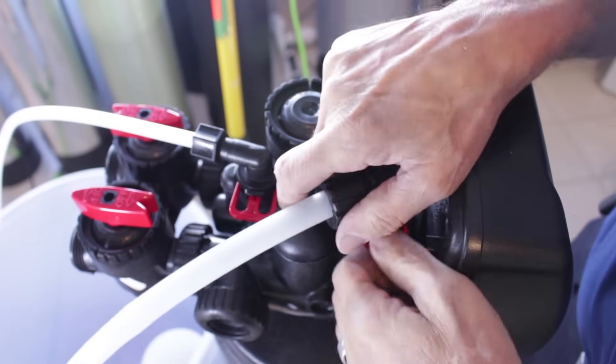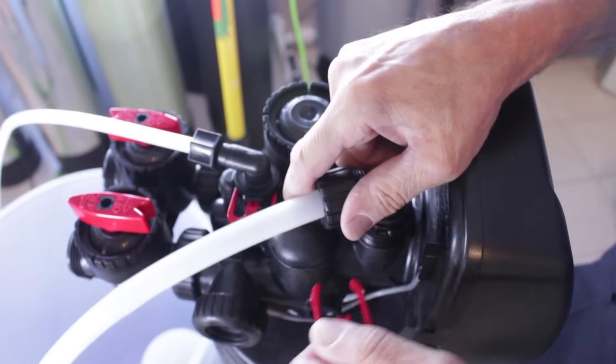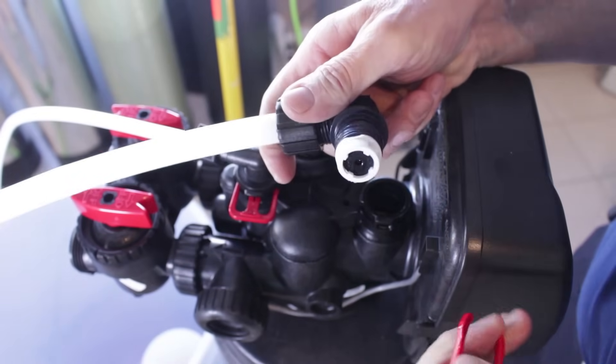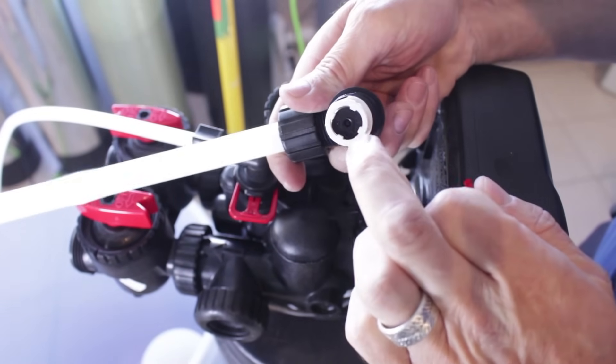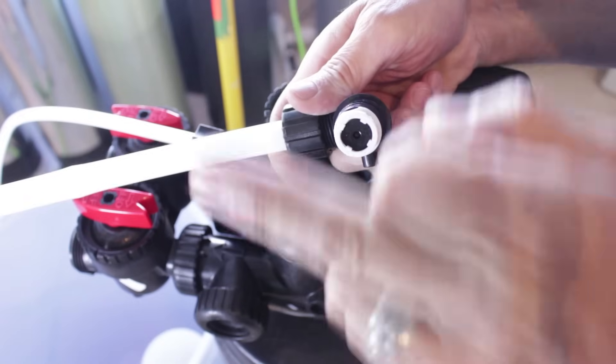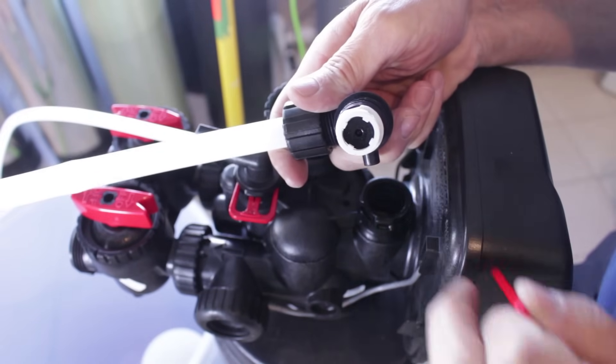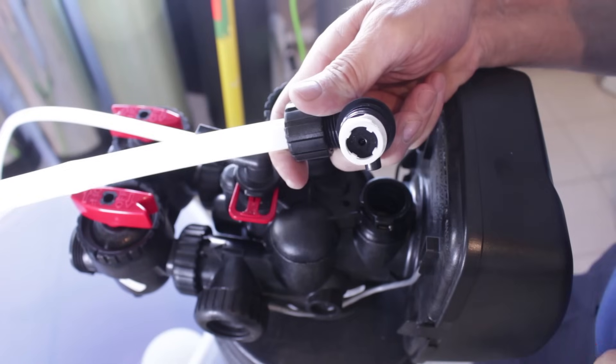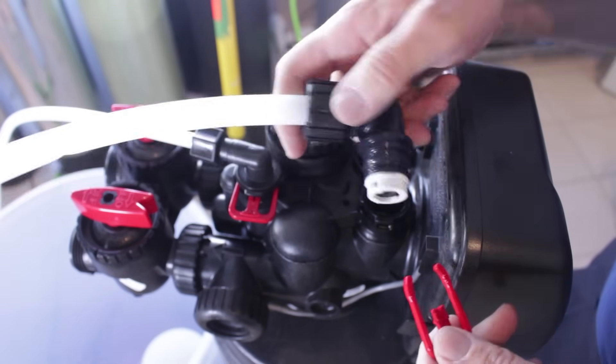The other thing to check is the drain line flow control. If we remove the drain line where it connects here, this little button here determines the amount of water that flows through. If that becomes clogged, and if you have iron it often does, that needs to be cleaned out to maintain that flow.